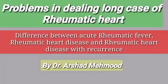So first you will differentiate whether it is a case of acute rheumatic fever or rheumatic heart disease. If it is acute rheumatic fever, then things are easier. In an exam setting, mostly we get cases of rheumatic heart disease. In that case, we have to further dig out whether the patient has come with recurrence, with arrhythmia, with infection, with poor compliance, or with heart failure. So a rheumatic heart disease patient can present with these conditions, and on the basis of history and examination, all these things should be ruled out.